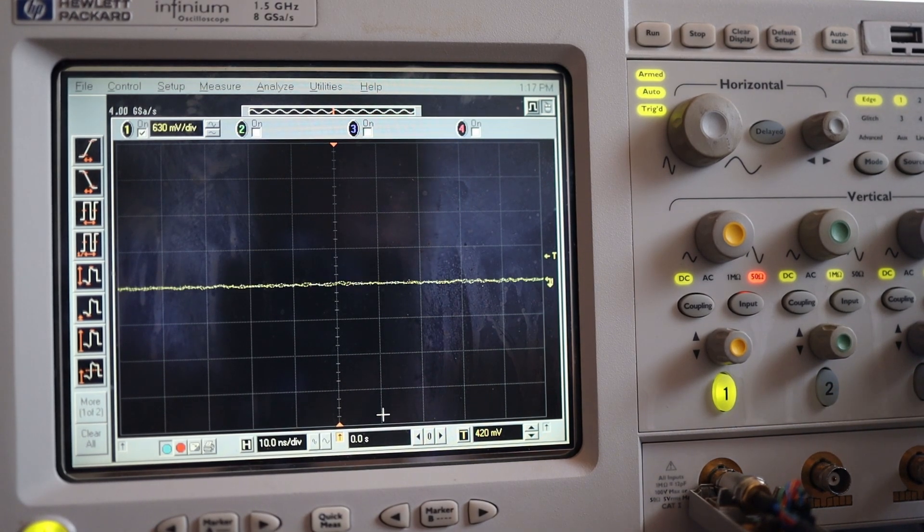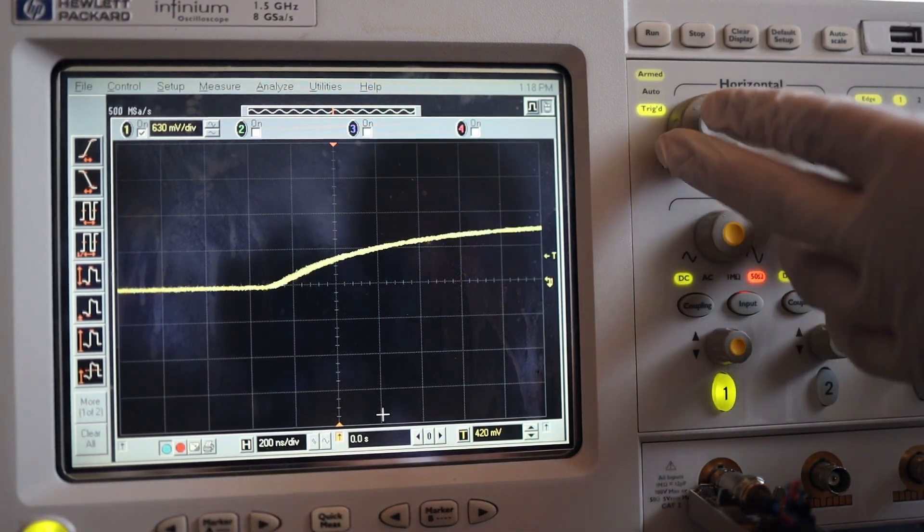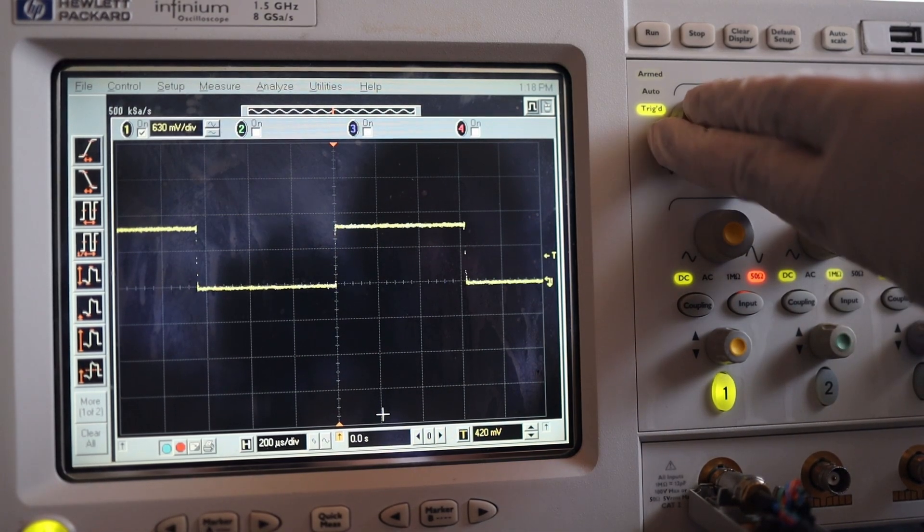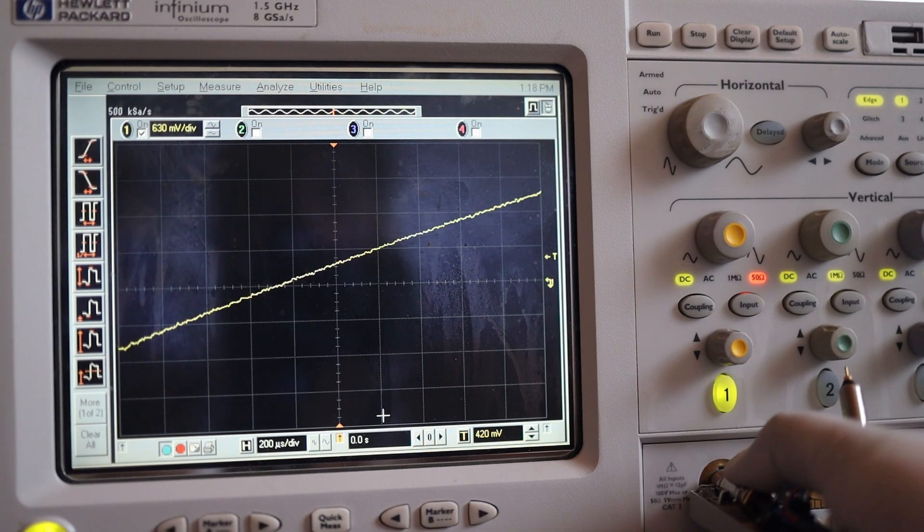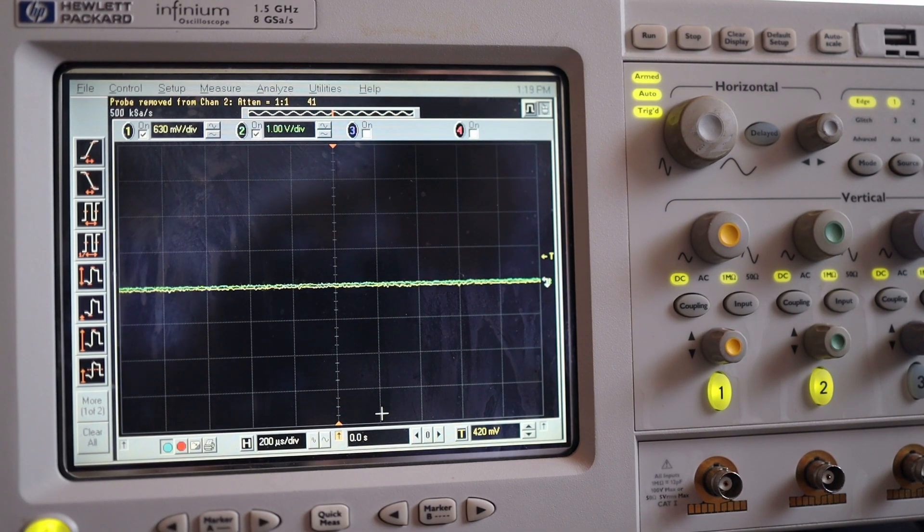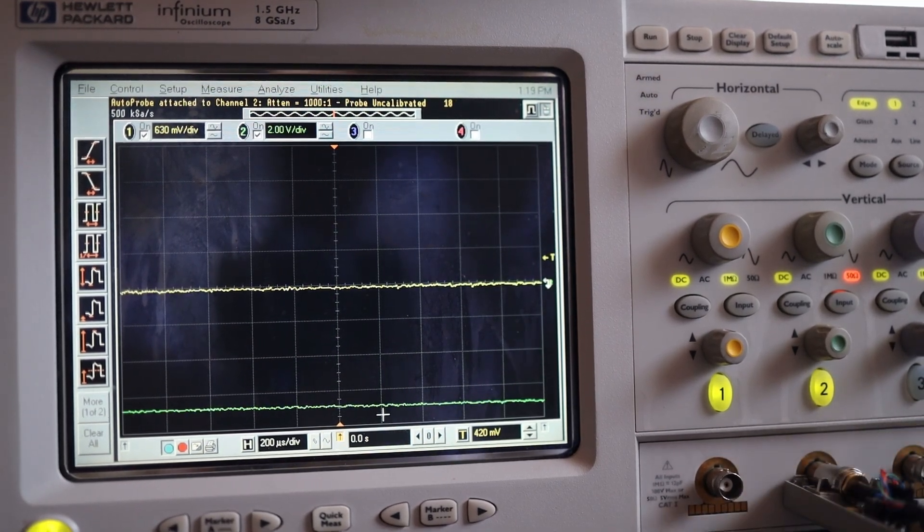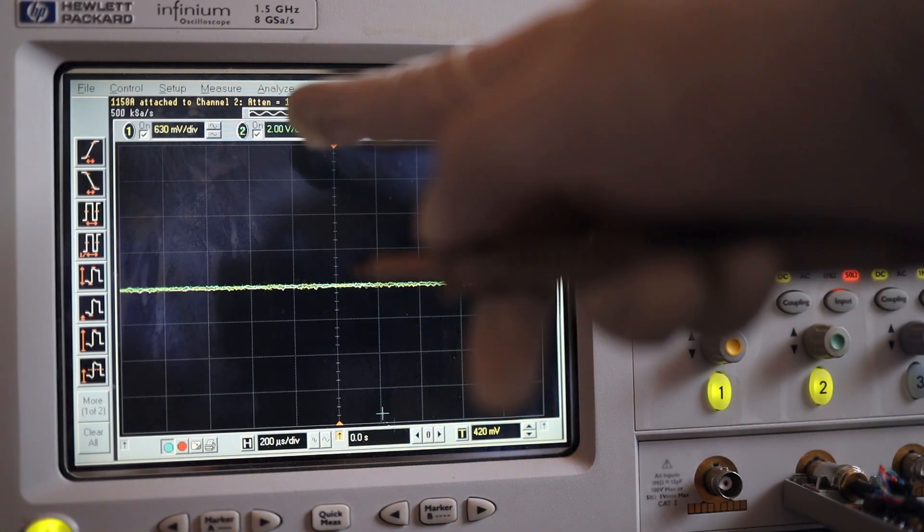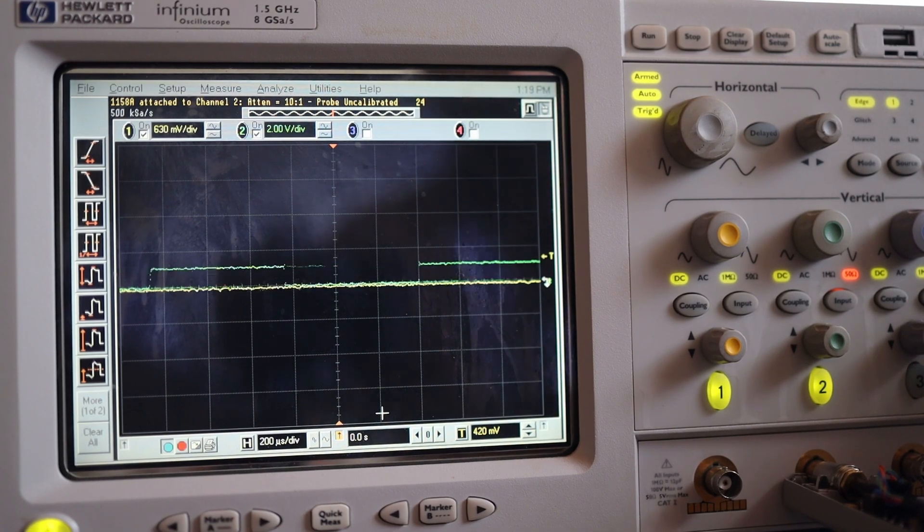It works perfectly fine. Let's see if it gets detected on other channels. Let's enable channel number 2. Let's see if it gets detected on channel number 2 as well. Detects it perfectly. 1158A, channel number 2. You can see the signal as well.